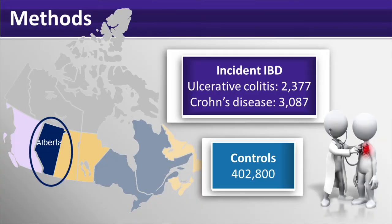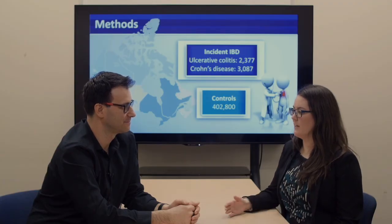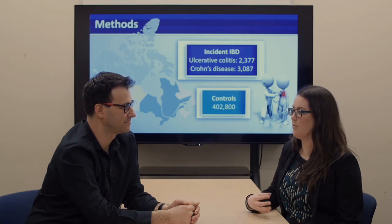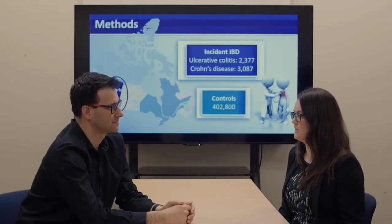So what methods did you apply to answer your question? We used health administrative data from the province of Alberta and applied a validated algorithm to identify incident, or new, diagnoses of Crohn's disease and ulcerative colitis. We had 2,377 cases of ulcerative colitis and 3,087 cases of Crohn's disease. We looked at their date of diagnosis and then looked backwards to see if they had a diagnosis of asthma prior to their IBD diagnosis, comparing the rate of asthma to individuals without these diseases using a logistic regression model. We adjusted for potential confounders including sex, living in a major urban centre such as Calgary or Edmonton versus outside these centres, and neighbourhood income quintile.